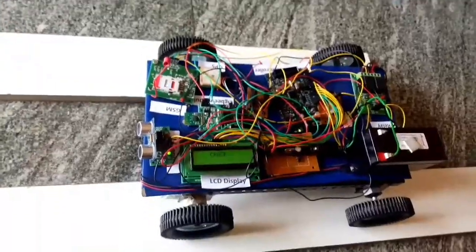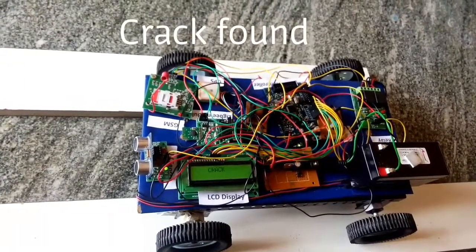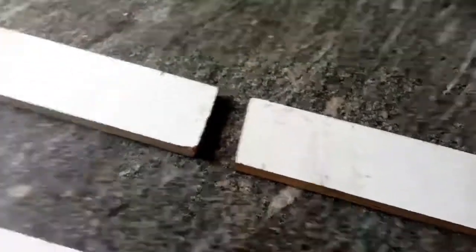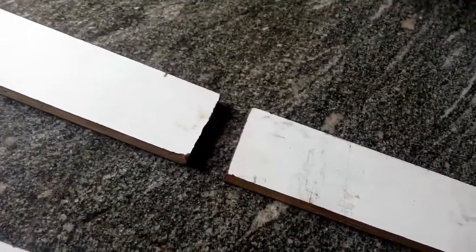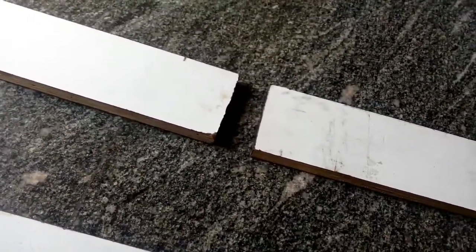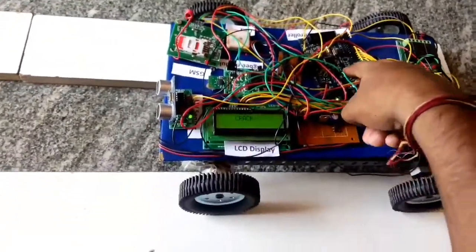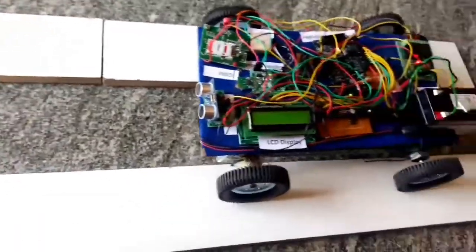Now let us see how the robot will detect the crack. Let us consider the gap between two wood planks as crack. Now I am turning on the robot. It starts moving.